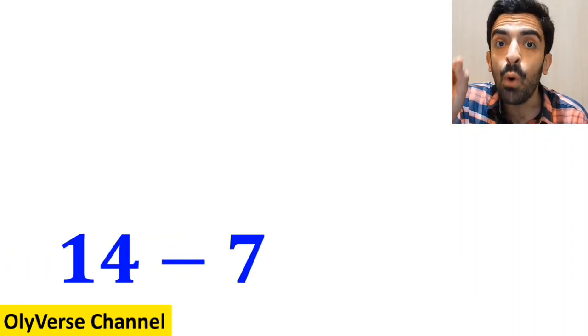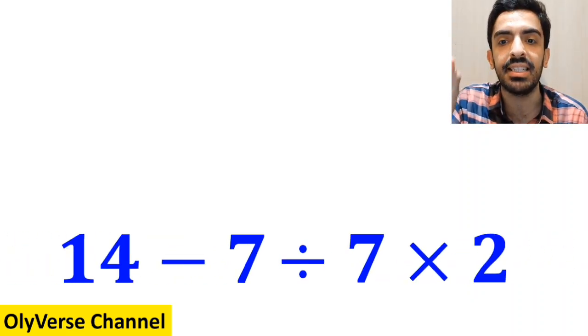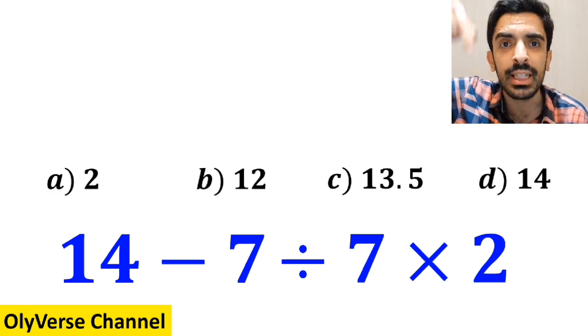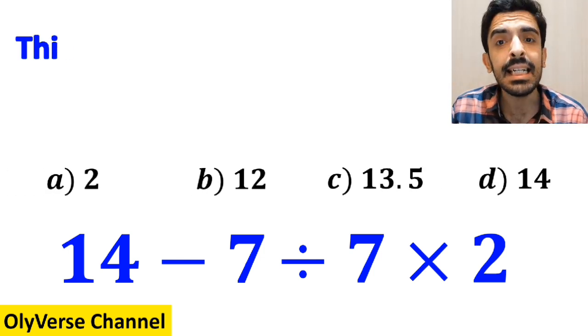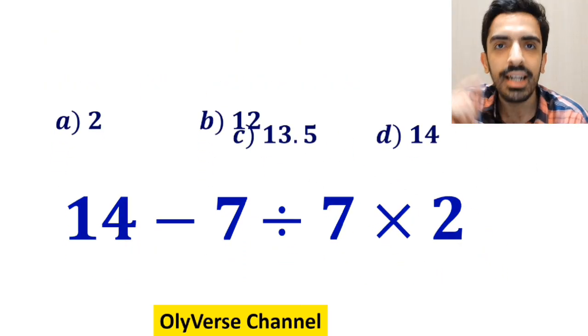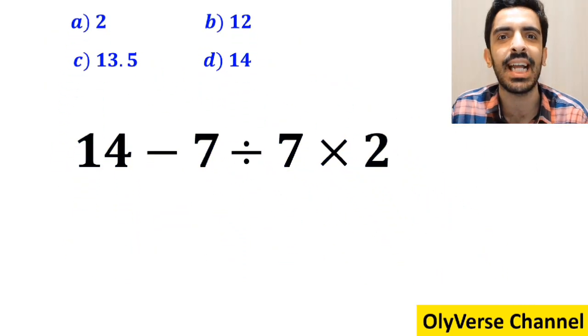What is the value of the expression 14 minus 7 divided by 7 then times 2? Which option do you think is the correct answer to this question? This expression has tricked almost 95% of people. Let's take a closer look and solve it together.